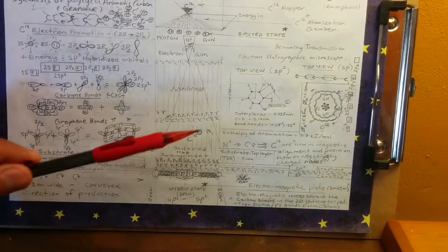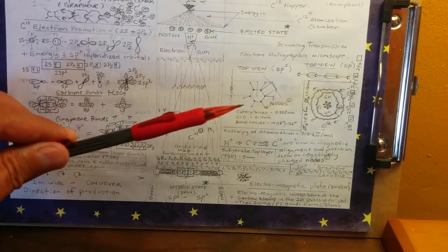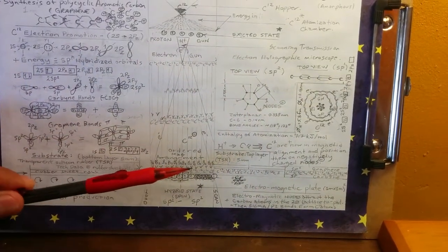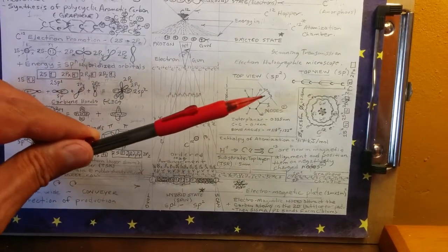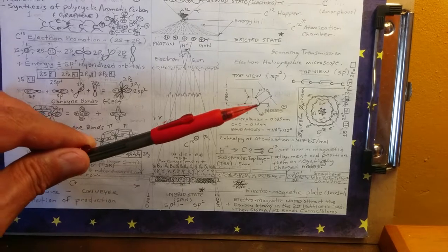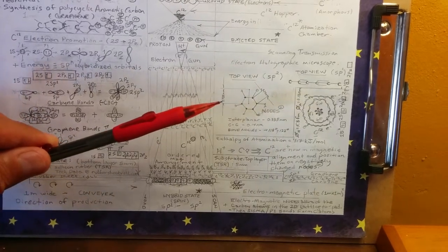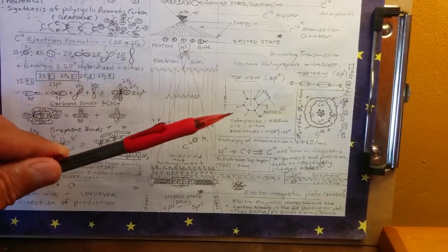Which is graphene. So you would have the base lattice in this configuration: 0.14 nanometers between carbon nuclei, and 0.335 nanometer distance interplanar.